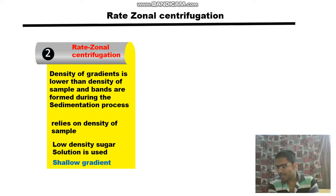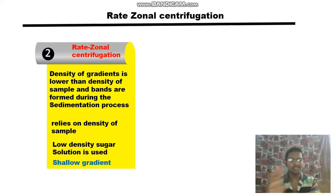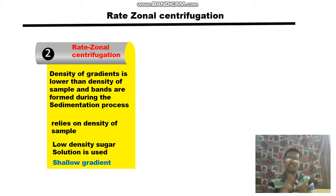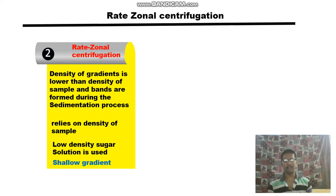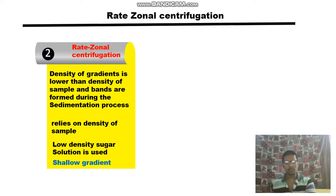The speed at which a particle sediments depends upon the density — this is the core principle of rate-zonal centrifugation. The whole principle relies on the density difference of the sample, and low-density sucrose is used as the gradient solution.